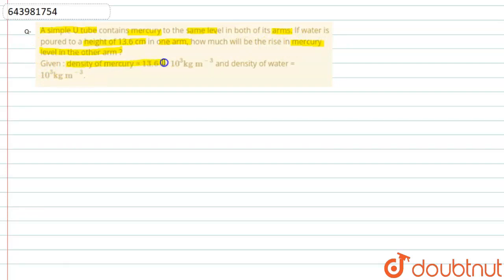of mercury = 13.6 × 10³ kg/m³ and density of water = 10³ kg/m³. For the answer, I'm going to draw a diagram and then explain.